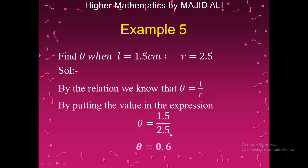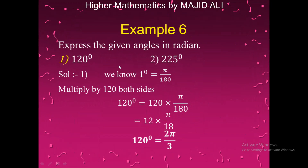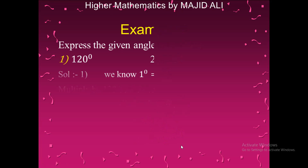Example 6: Express 120 degrees in radians. Using the relation 1 degree equals π/180, multiplying both sides by 120 gives: 120 degrees equals 120 × π/180. Cancelling common factors of 60, we get 2π/3 radians. Therefore, 120 degrees equals 2π/3 radians.